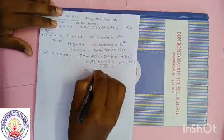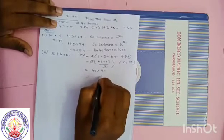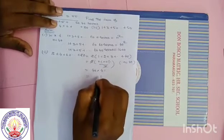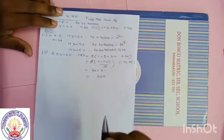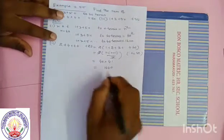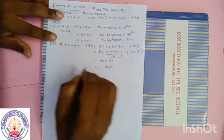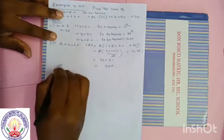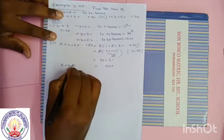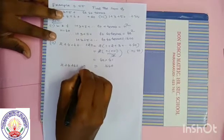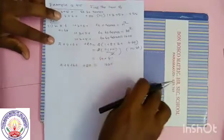So 40 into 41, which equals 1640. The answer for 2 plus 4 plus 6 plus dot dot dot plus 80 is 1640. Second question over.